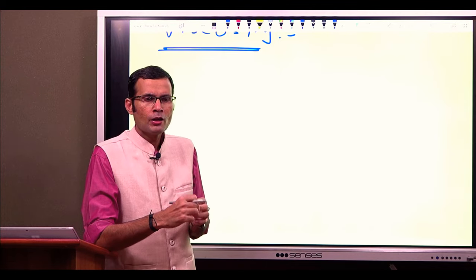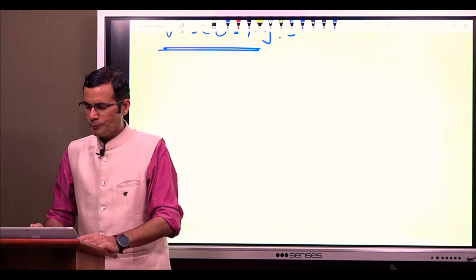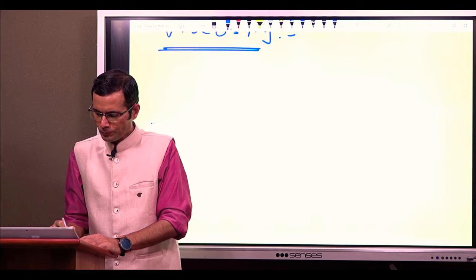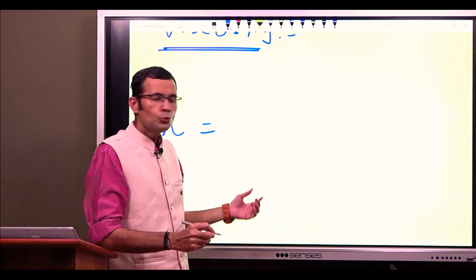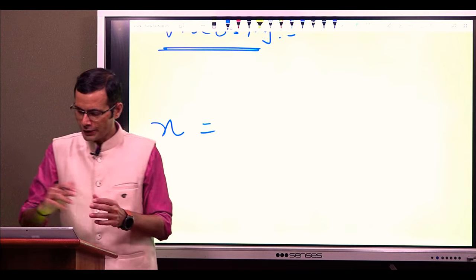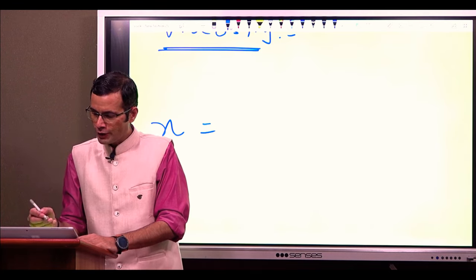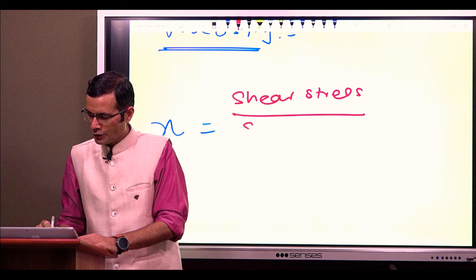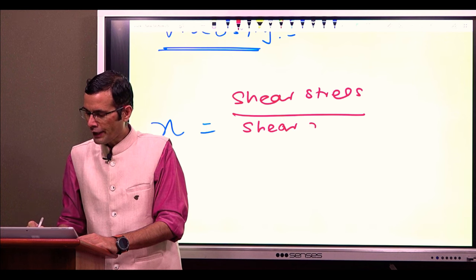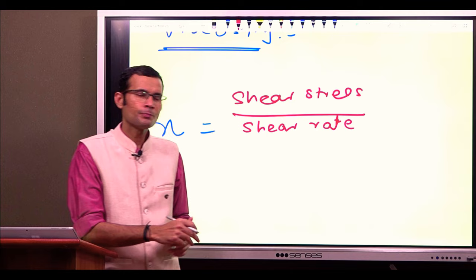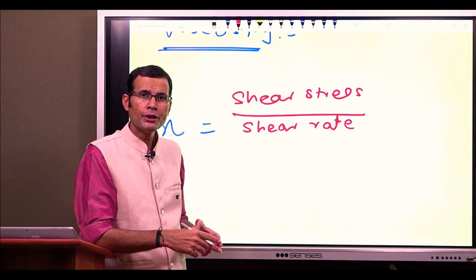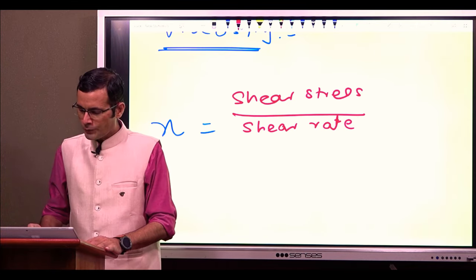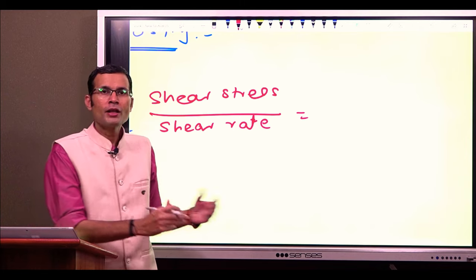How is viscosity calculated? Viscosity μ is defined as the ratio of shear stress upon shear rate. Let me explain these terms in the case of any fluid — what is its viscosity defined as? It is the ratio of shear stress to shear rate.